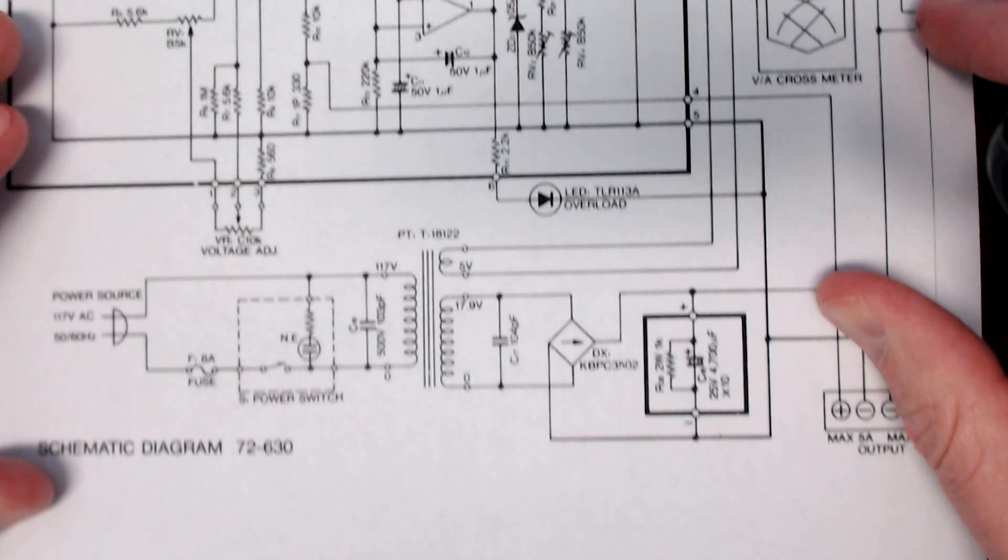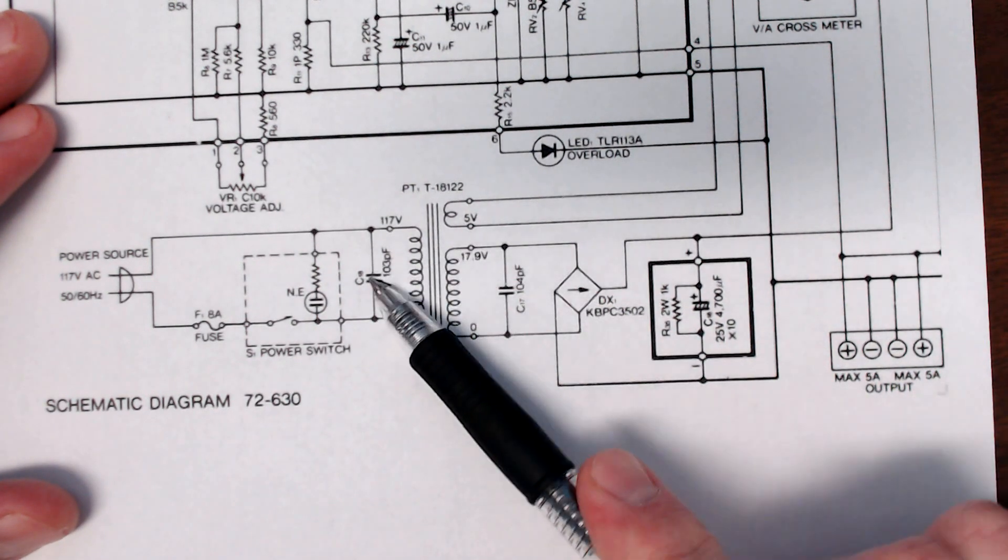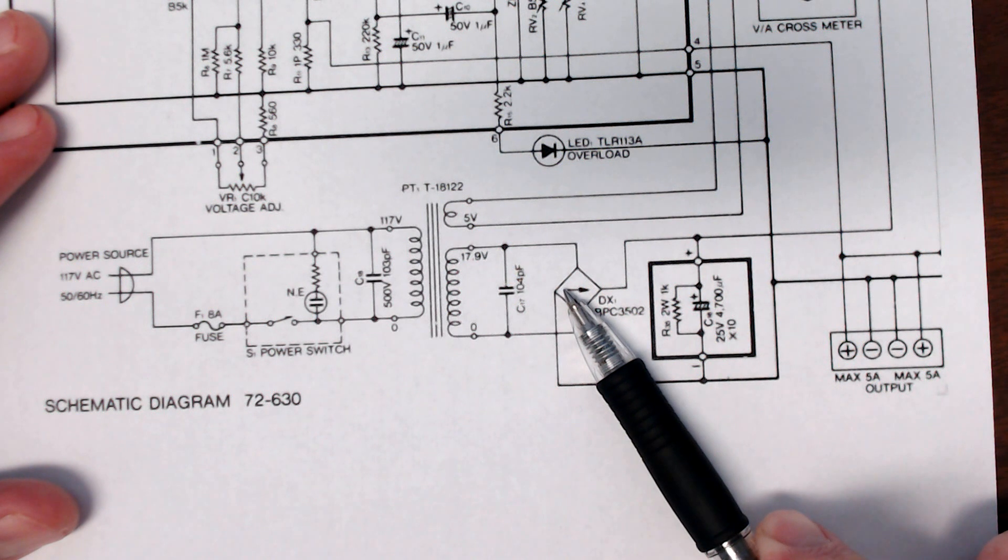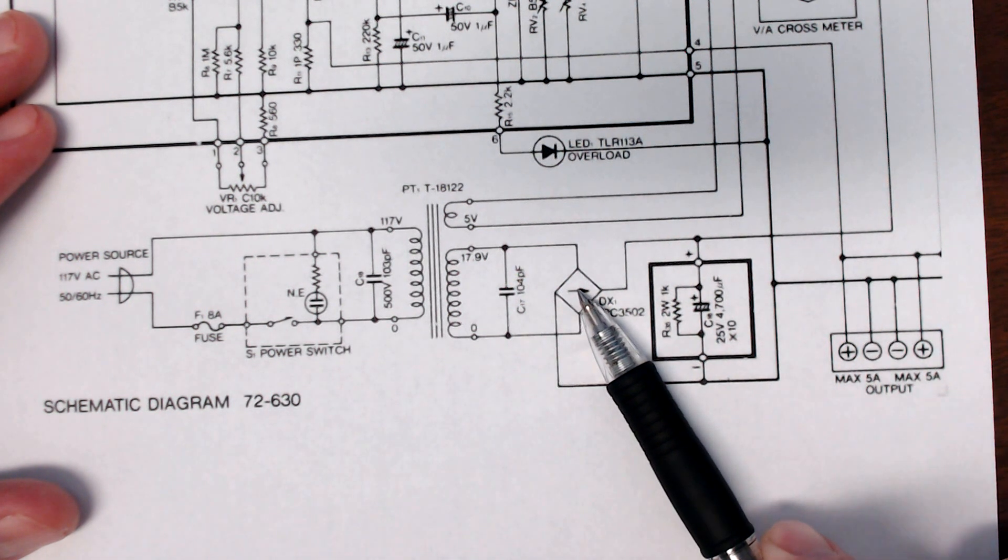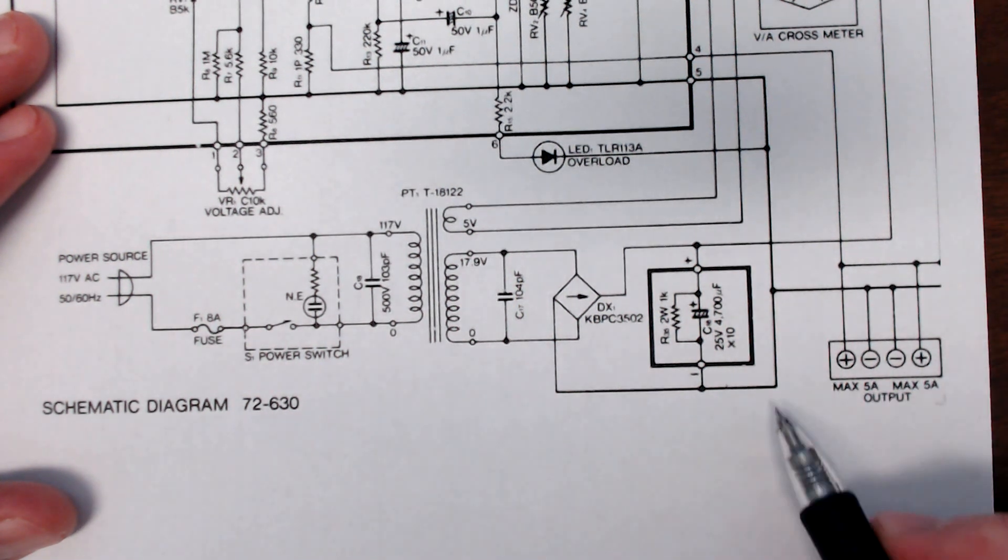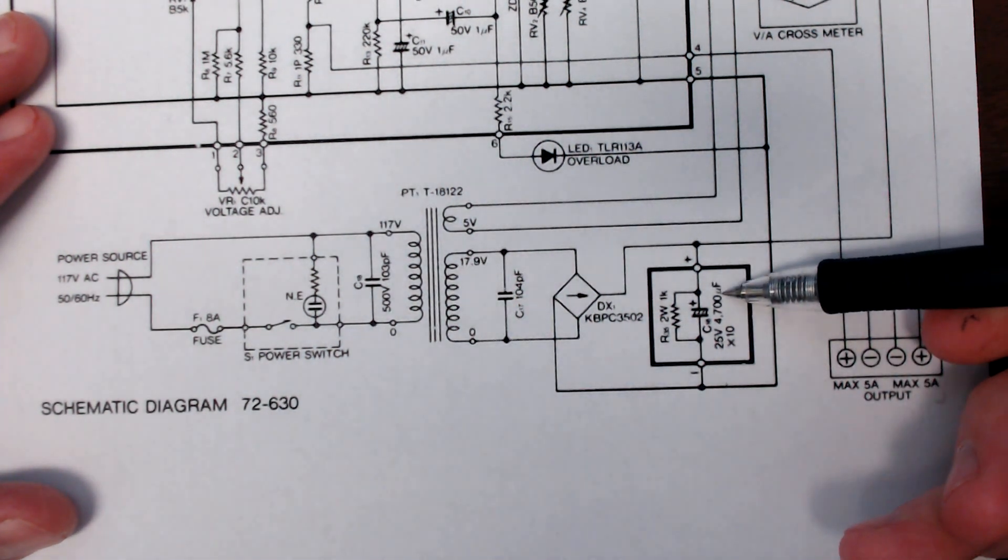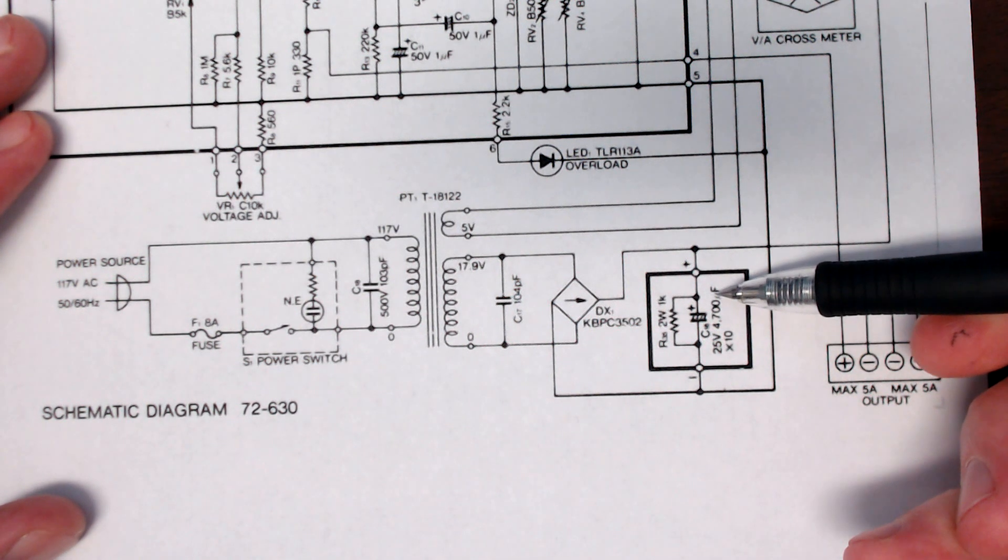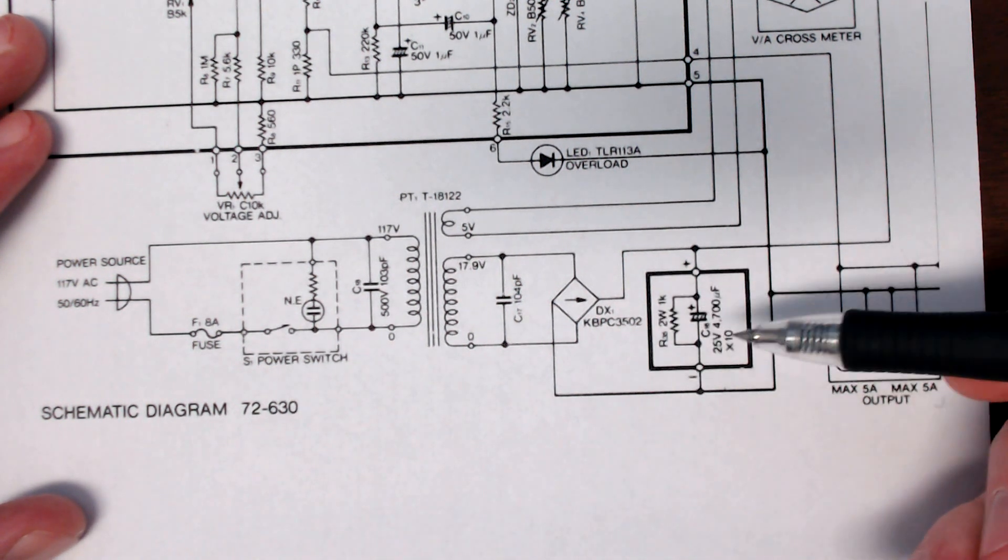If you look here, we see that this is our same one we looked at in the last video: transformer, RF filter, here's our bridge rectifier, just an alternate symbol for that, and our filter capacitor. That's our filter capacitor, 4700 microfarads, 10 in parallel, so 47 millifarads as effective one unit.